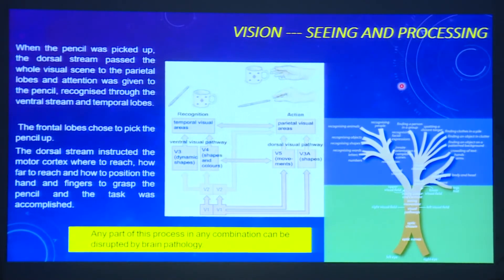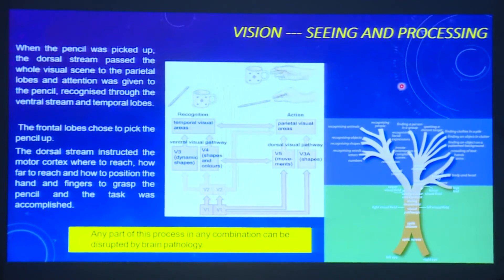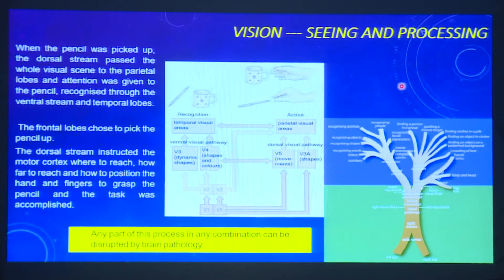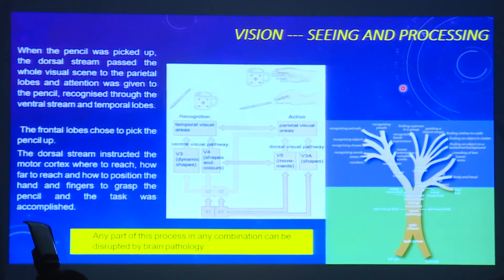Vision is not just visual acuity 6/6 — it is seeing and processing. For example, when a pen is picked up, the dorsal stream passes the whole visual scene to the parietal lobe, which gives attention to the pencil. The ventral stream recognises it as a pencil. The frontal lobe decides whether to pick it up. The dorsal stream then instructs the motor cortex on how far to reach, how to grasp it, and how to hold it — and the task is accomplished. This is an incredibly complex process, and damage to any part of it is exactly what we see in CVI.